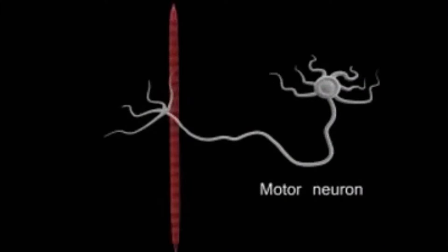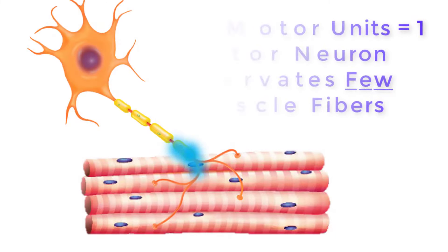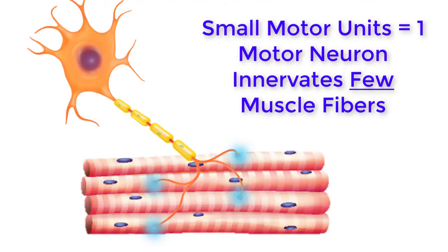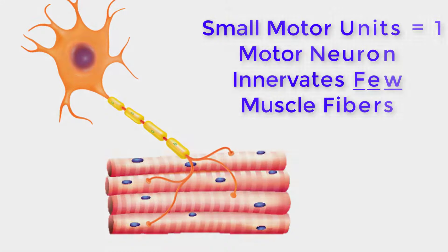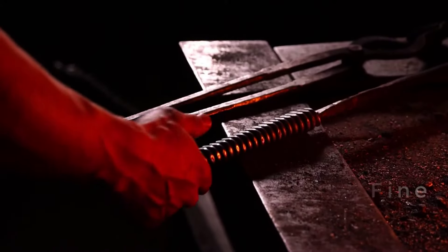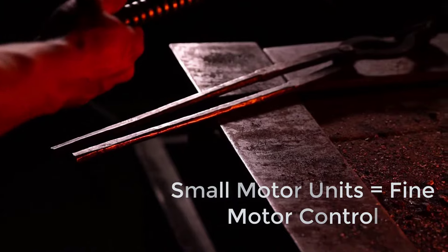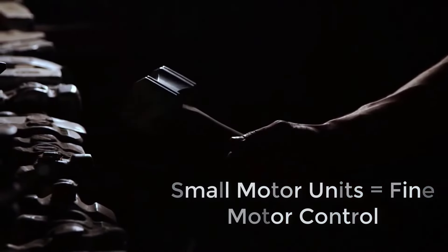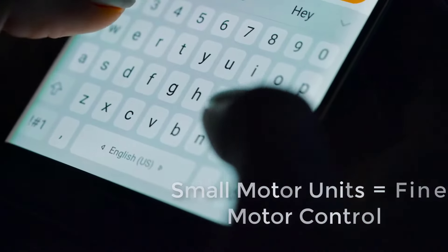The size of a motor unit is variable depending on the nature of the muscle. A small motor unit is arranged where a single motor neuron supplies a small number of muscle fibers in a muscle. Small motor units permit very fine motor control of the muscle, for example for grasping, texting, and typing.